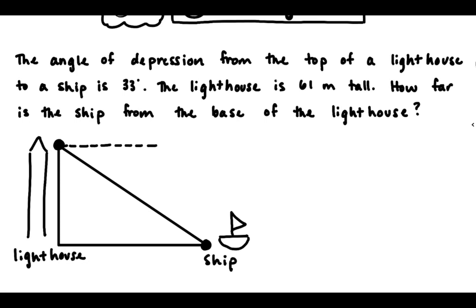So angle of depression from the top of a lighthouse is 33 degrees. So there's our first piece of information. Angle of depression is 33 degrees. So where is the angle of depression? Well that's up high looking down, so it's going to be up here looking down at the ship. And the angle of depression is the angle from horizontal down. So it's going to be this angle here. So that's our 33. So first piece labeled.